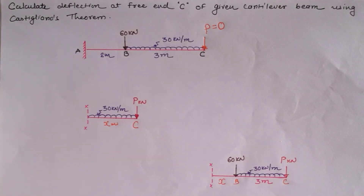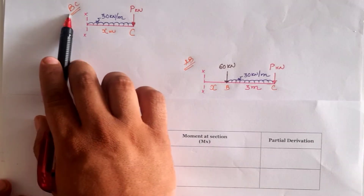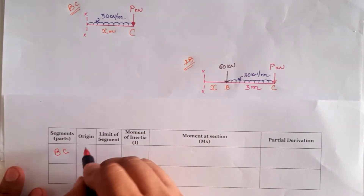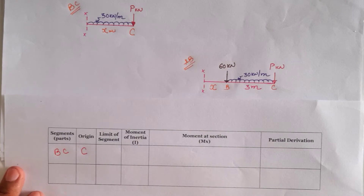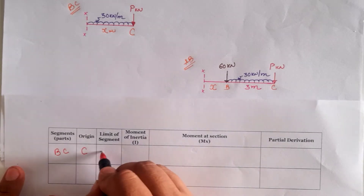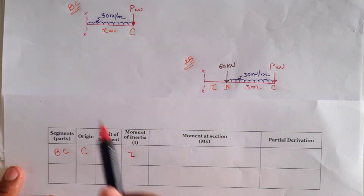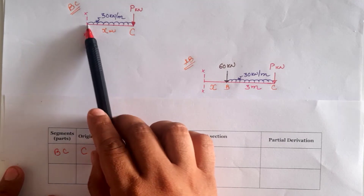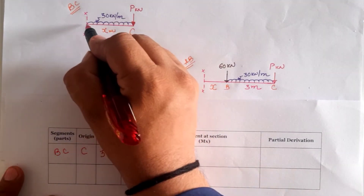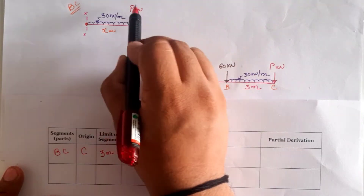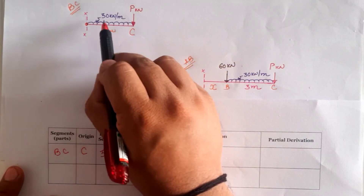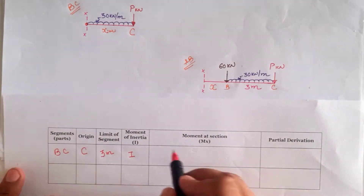For the calculation table using Castigliano's theorem, we have the B to C segment where the origin is at C. The limit of the B to C segment is 3 meters as given in the beam, and the moment of inertia is constant as it is not given otherwise. The moment at position x has a clockwise component P·x, and for the UDL it is load times distance times distance divided by 2.